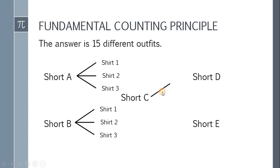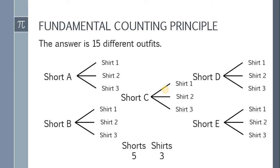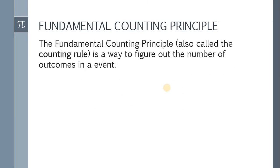The same goes for short C, short D, and short E — each paired with the three shirts. So in total, we have 15 different outfits. Now is there a way to arrive at 15 using just the 5 and the 3? Yes, there is a shortcut: if we multiply 5 and 3, we get 15. And that's the idea of the fundamental counting principle.